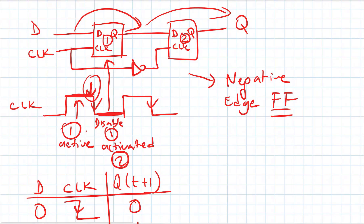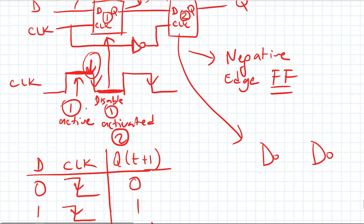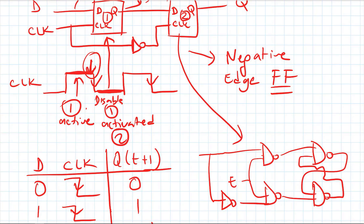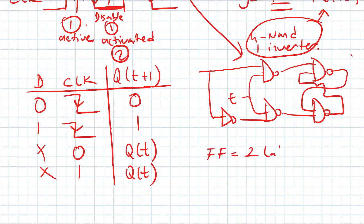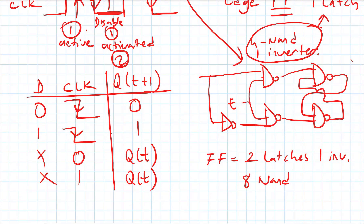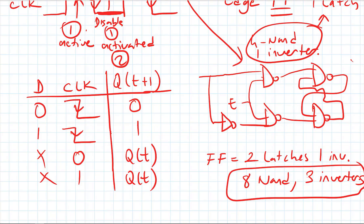How many gates are inside this flip flop? Inside each latch, assuming NAND-based design, we have four NAND gates and one inverter. Since a flip flop uses two latches plus one inverter, the total is eight NAND gates and three inverters. Flip flops are twice as large as latches, but they are more reliable in digital circuits, which is why we prefer edge triggered flip flops over latches.